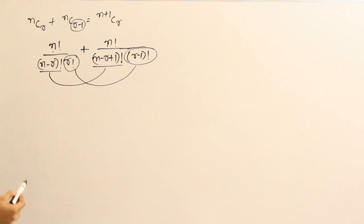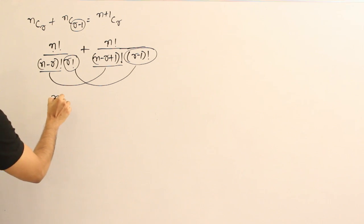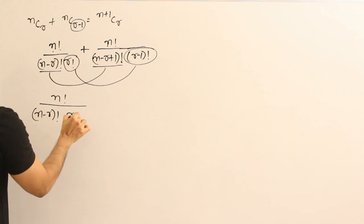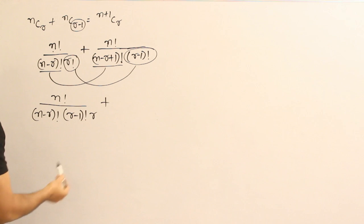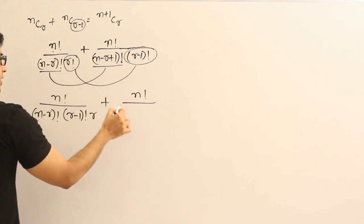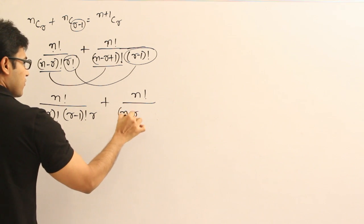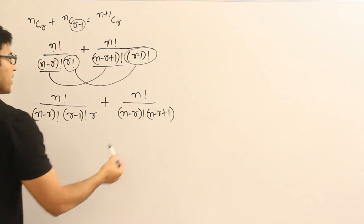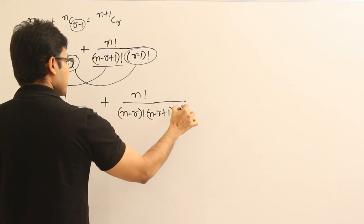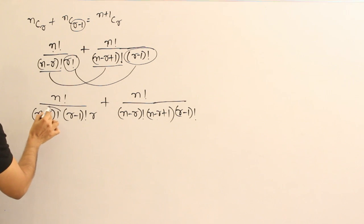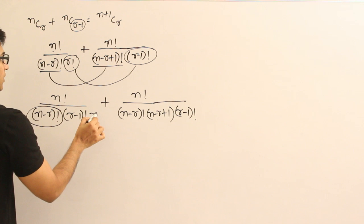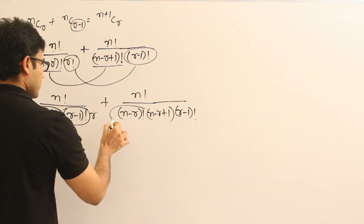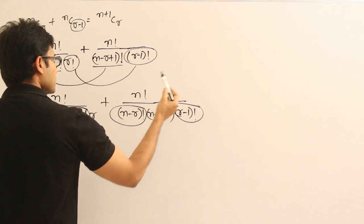I'll try to rewrite the terms to pull out common factors. So: n factorial divided by — I'll leave (n minus r) factorial as is but write r factorial as (r minus 1) factorial into r — plus n factorial divided by — I'll write (n minus r plus 1) factorial as (n minus r) factorial into (n minus r plus 1), so these two together become (n minus r plus 1) factorial into (r minus 1) factorial. Now (r minus 1) factorial is common.